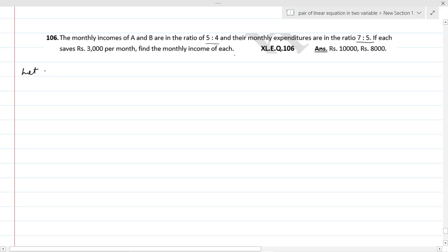Okay, so let monthly incomes of A and B be X and Y rupees respectively. We have monthly income of A is X and B's monthly income is Y, so their monthly incomes are X and Y. So take it as equation first.